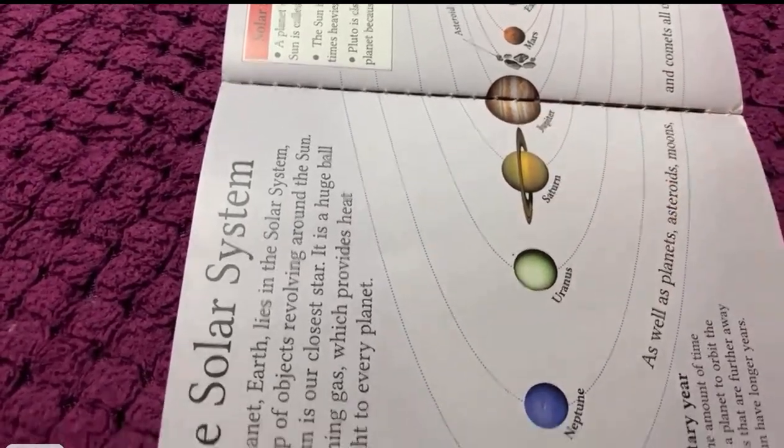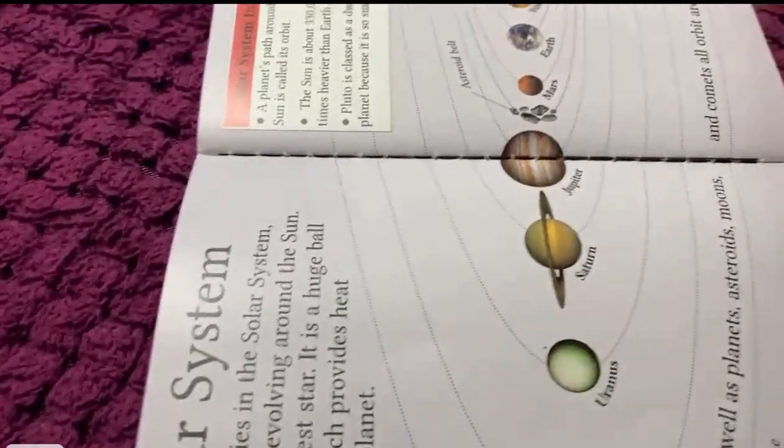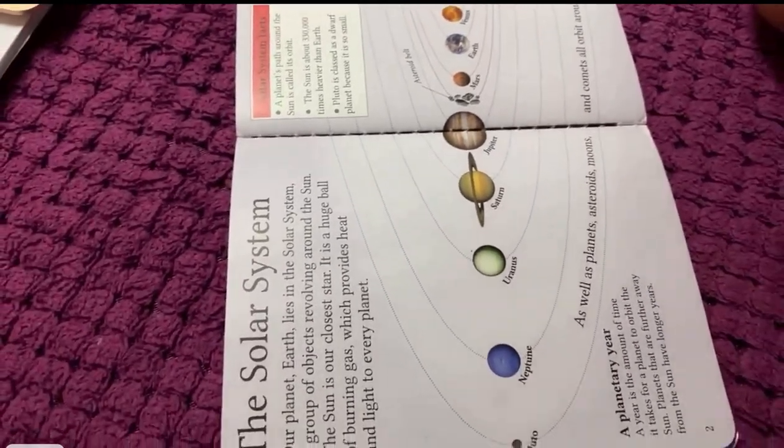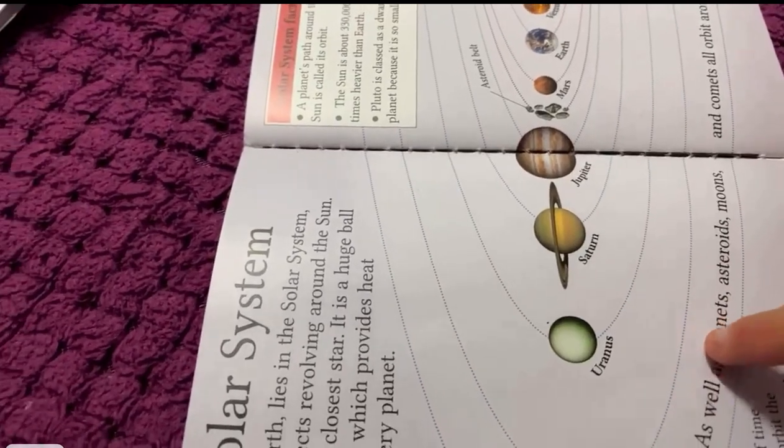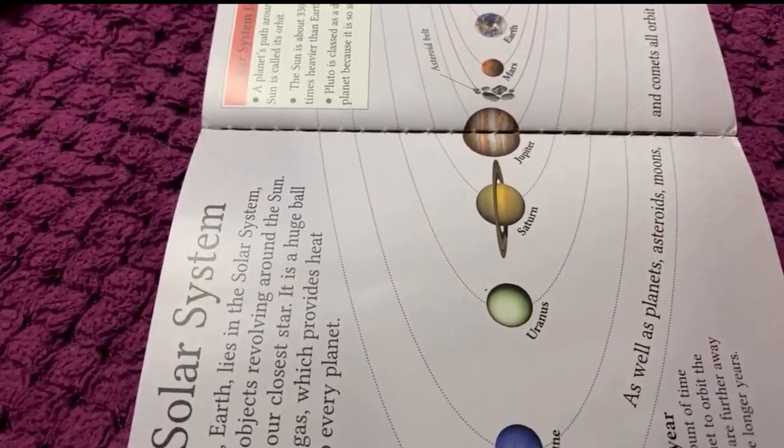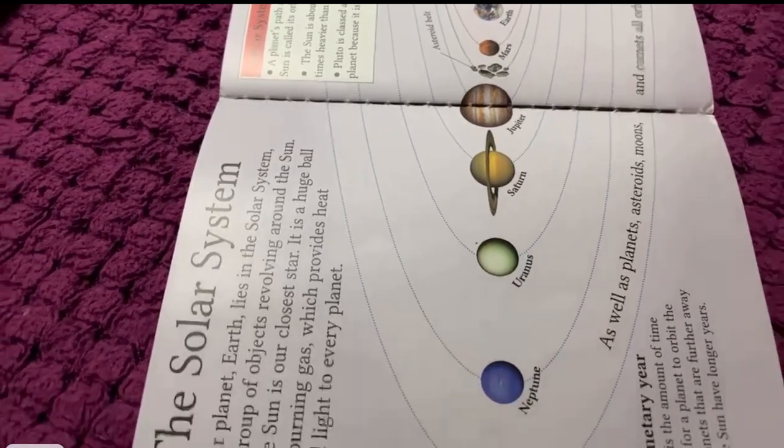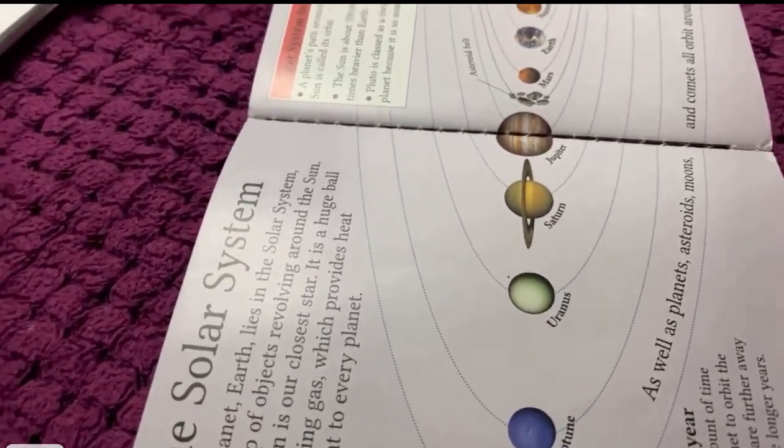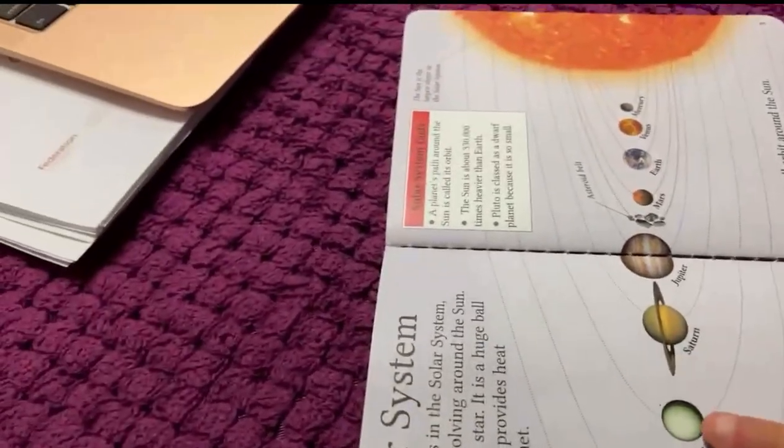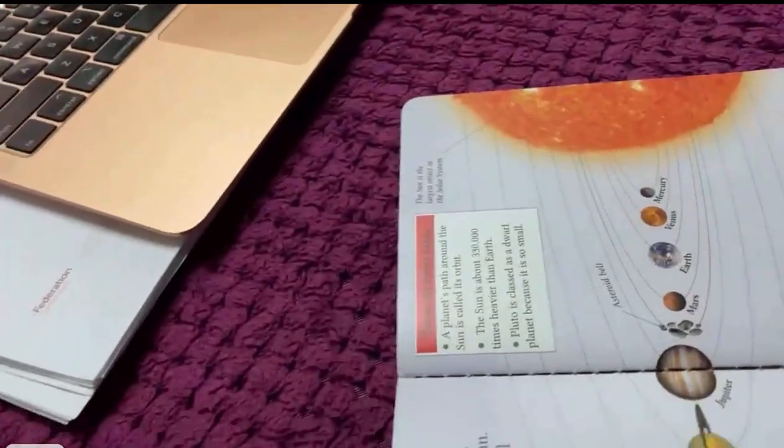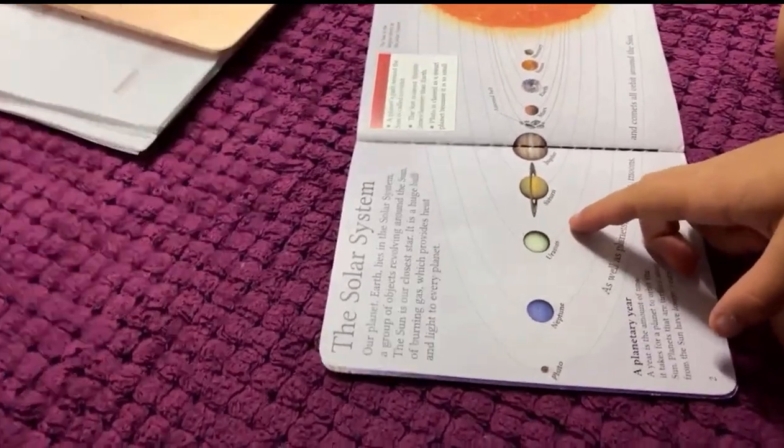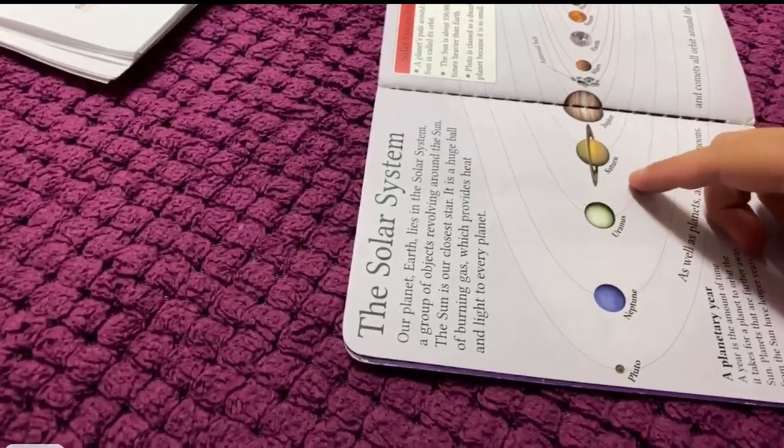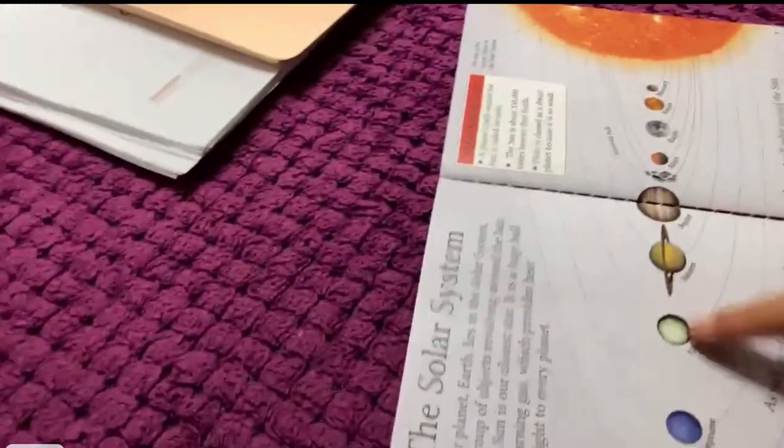And here's Saturn. Saturn has rings around it. The rings are made out of stones. And Uranus smells like cheese. I saw on a video, I once heard on a video on the TV, Uranus smells like cheese.